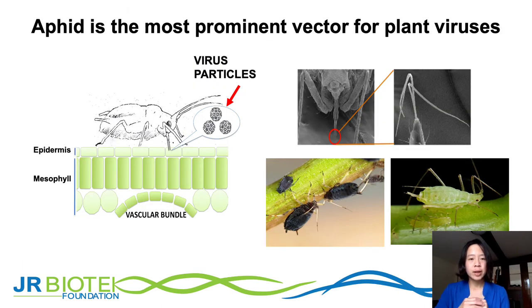Spray a bit of water and then leave the plant for about three to seven days, after which you would see symptoms if a virus is present in your infected material. Another way for a virus to enter a plant is by insects, and there are many insect species that can transmit viruses.